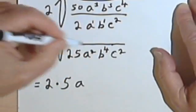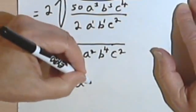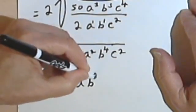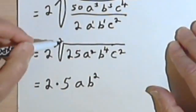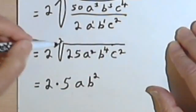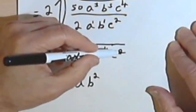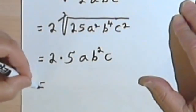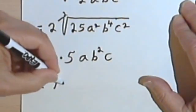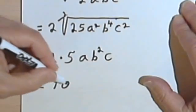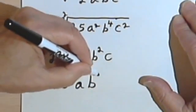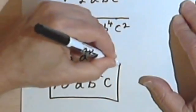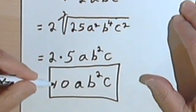b to the 4th, dividing 2 into 4, I get a 2. So I'm going to get b squared. And taking the c squared and dividing 2 into that exponent 2, I'll get a c. And now all I have to do is multiply my 2 times 5, so that will give me 10ab squared c. And that's going to be my simplified version of the original problem.